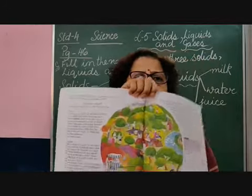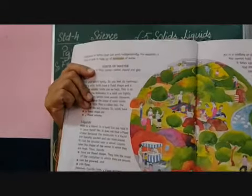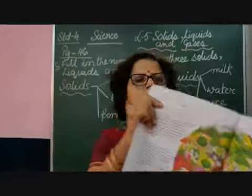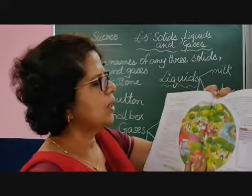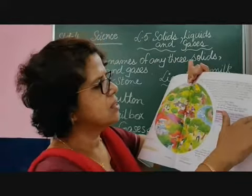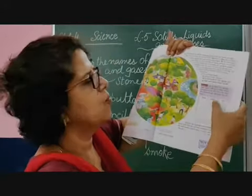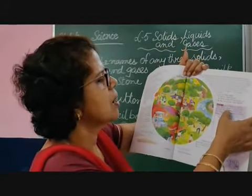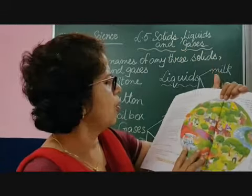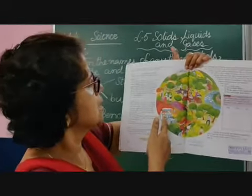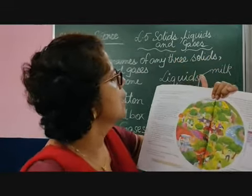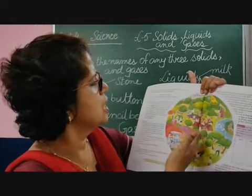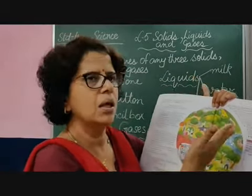If you look at this picture in your science textbook, you can see many things. You have to tell whether they are solids, liquids, or gas, and write in the table provided. You can identify solid objects like the ice cream cart, vehicles such as the car and bus, the dustbin, trees, and people — they are all solid.